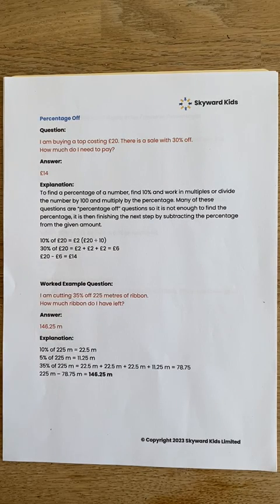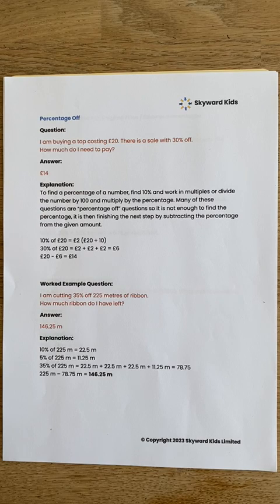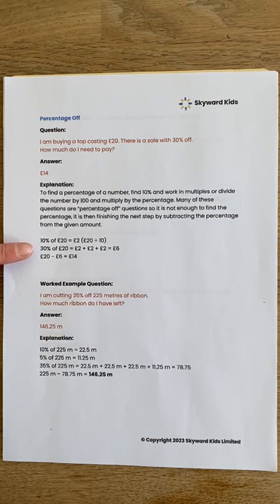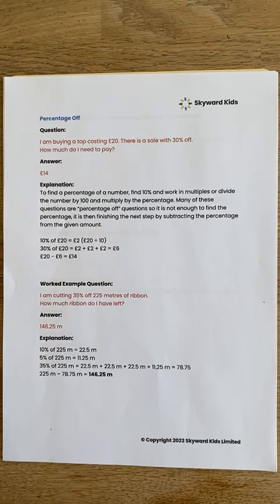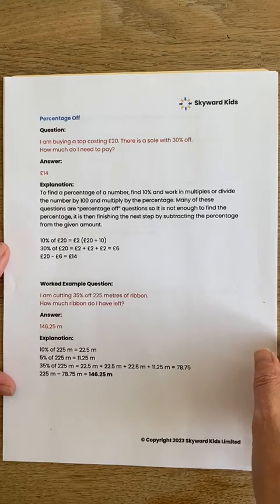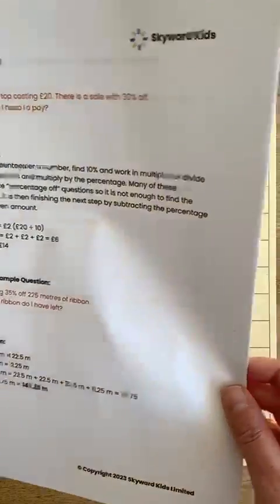In this question we have three steps. We need to find a percentage, so we need to find 10% first. We then need to find the percentage they give — the 30% — and then we need to take that away from the full amount. Let's have a look at how we do that.